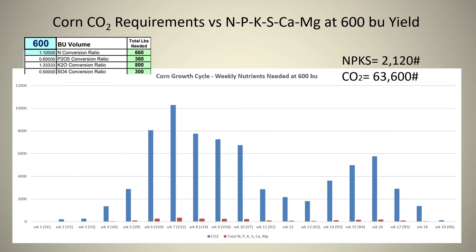There are no exceptions to that. When you run out of CO2 — carbon dioxide — your plant will not take up additional nitrogen, phosphorus, and potassium, even if it's there.